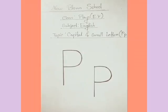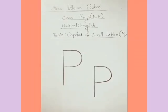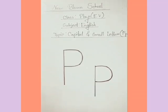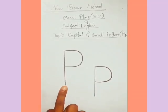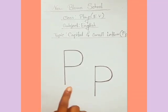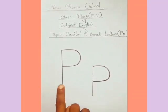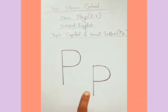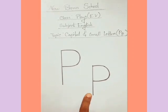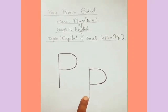Now I am going to our today's class topic. Today my alphabet is P. This is a capital letter P. This is a small letter P. Now say with me: This is a capital letter P. This is a small letter P.